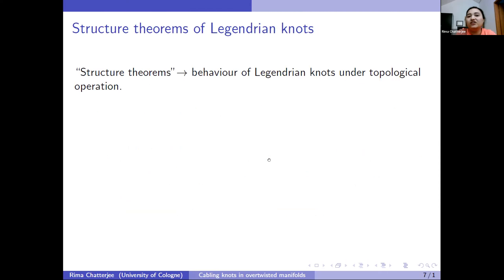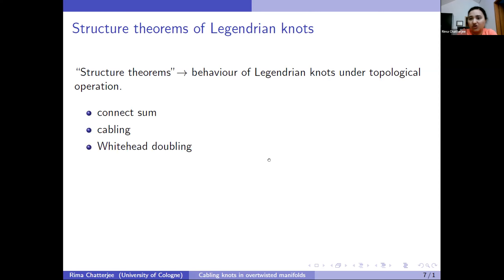My goal is to talk about the structure theorem — how a Legendrian knot behaves after we do some kind of topological operation. We have three topological operations: connect sum, cabling, and Whitehead doubling. Today I'll focus on cabling, but connect summing and Whitehead doubling are also very interesting.